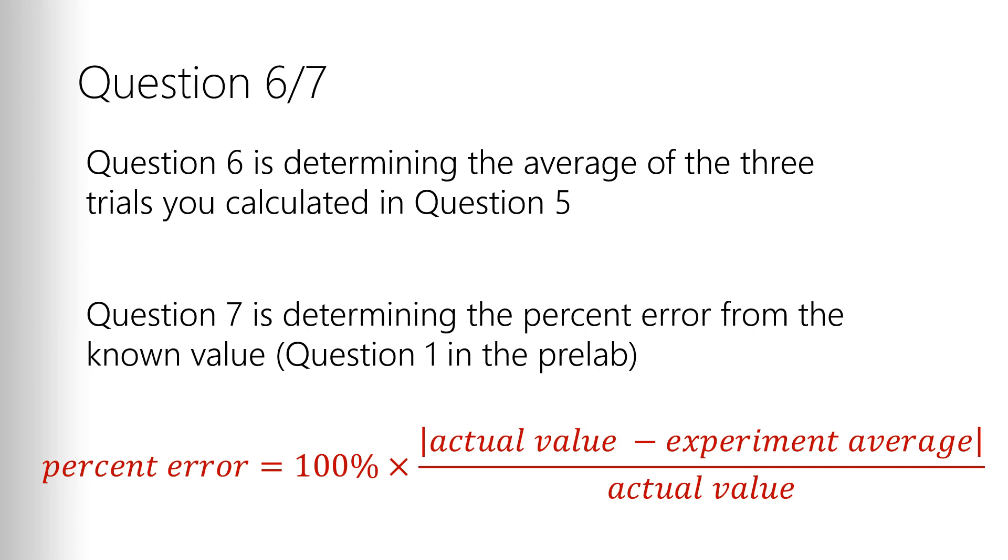The absolute value bars, the vertical bars on either side of the top part of the fraction, that means that there's no negatives in this answer. Whatever value it is, you turn it into a positive. So your percent error should always be a positive. So the fraction will give you a fractional value. You need a decimal value, point something, and then you multiply it by 100% to get the actual percentage.